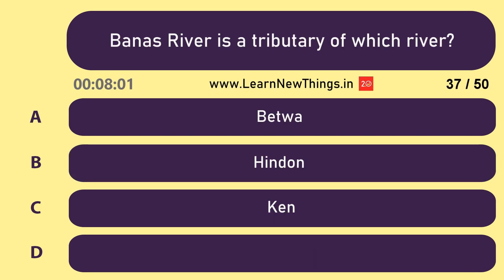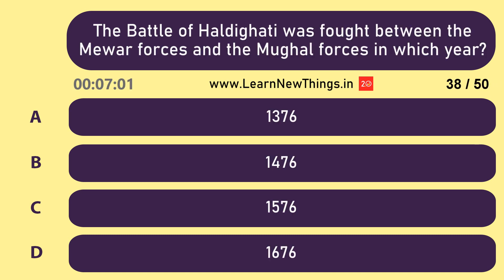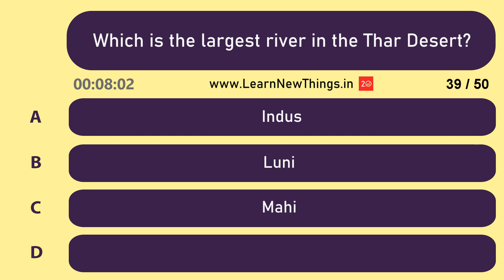Banas River is a tributary of which river? Chambal. The Battle of Haldighati was fought between the Mewar forces and the Mughal forces in which year? 1576. Which is the largest river in the Thar Desert? Luni.